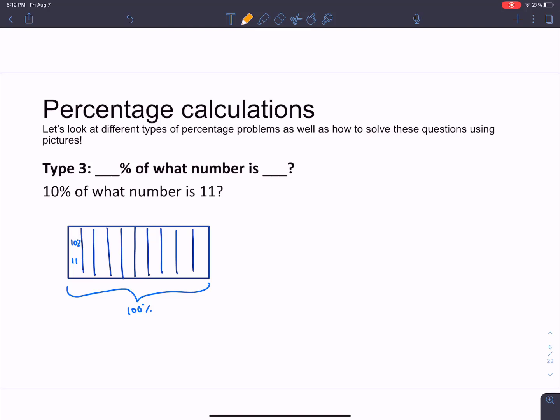So here's a different type of question. 10% of what number is 11? So here is my entire rectangle that represents 100%. I don't know what number that 100% represents. That's what I'm trying to figure out this time. But I did the same thing. I broke them up into 10 pieces. Each of these pieces represents 10%. But that 10% also represents 11. So how would I figure out what the entire thing is? Well, I would just take 11 and add it 10 times, or I would take 11 and multiply by 10. And so that number is not too hard to do. That was 110.